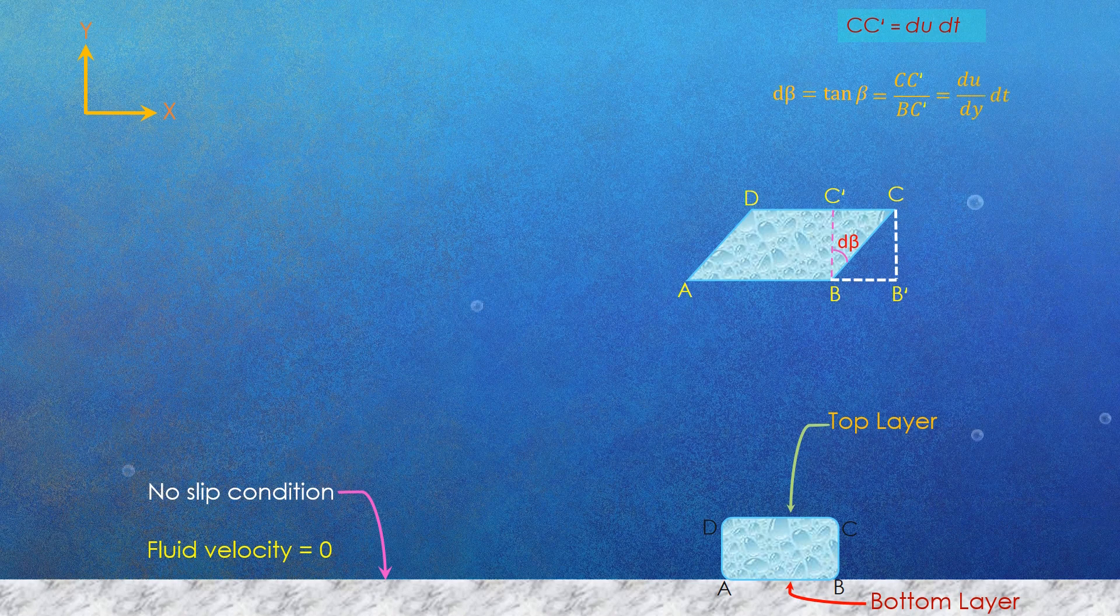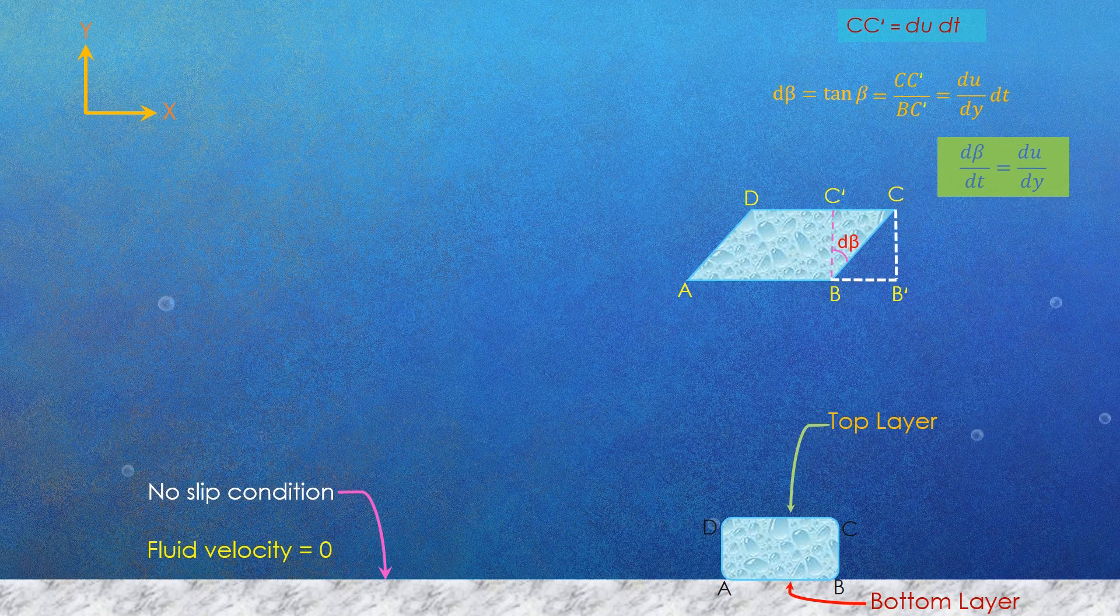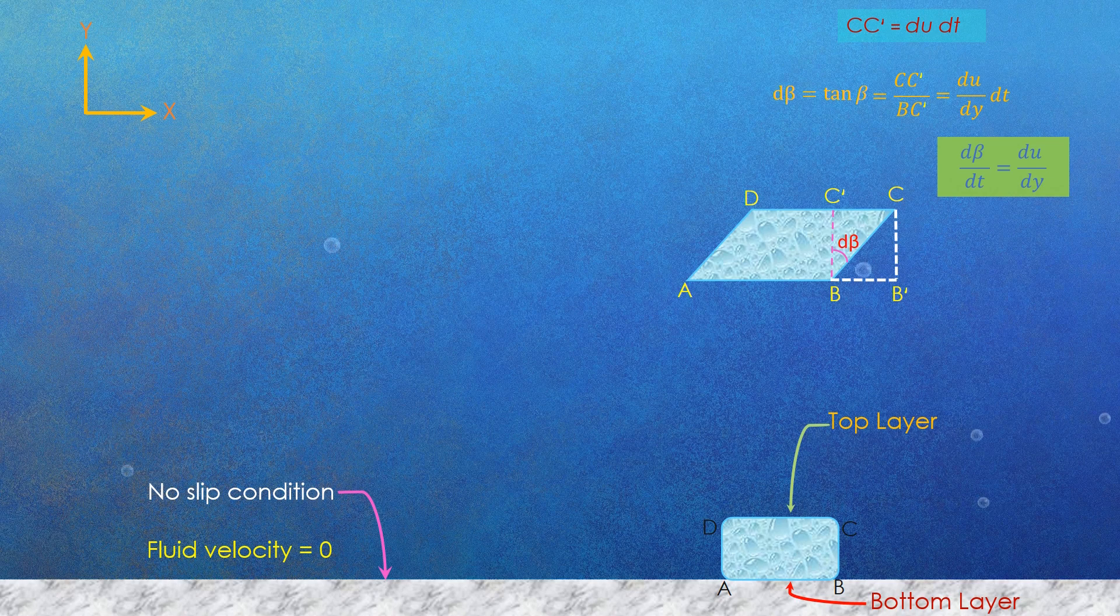BC dash is the vertical height of the fluid element given by dy. So further we can write d beta by dt is equal to du by dy. From this equation we can conclude that the rate of deformation of a fluid element is equivalent to the velocity gradient du by dy.